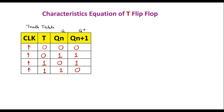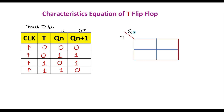We have two variables, T and Qn, so we need a 4-cell K-map. Cell 0 (T=0,Q=0)=0; Cell 1 (T=0,Q=1)=1; Cell 2 (T=1,Q=0)=1; Cell 3 (T=1,Q=1)=0. Cells 1 and 2 cannot form a standard pair with each other since they are diagonally placed, so we treat them individually.